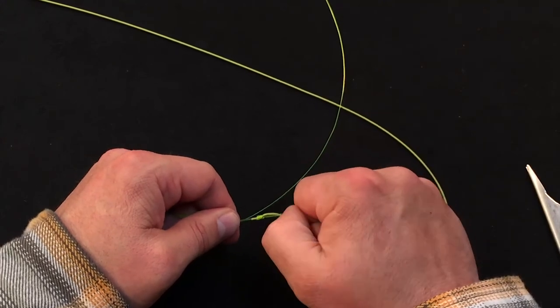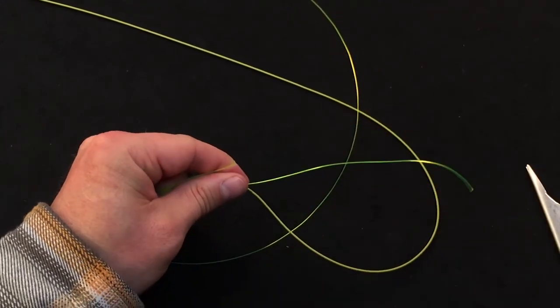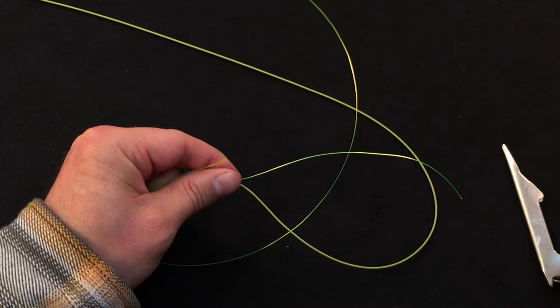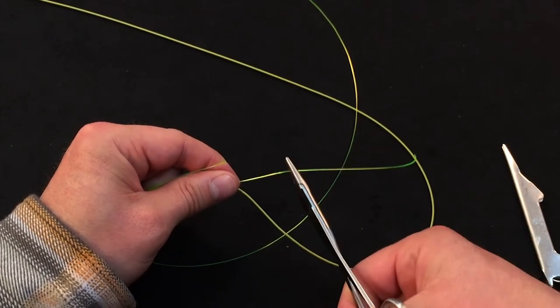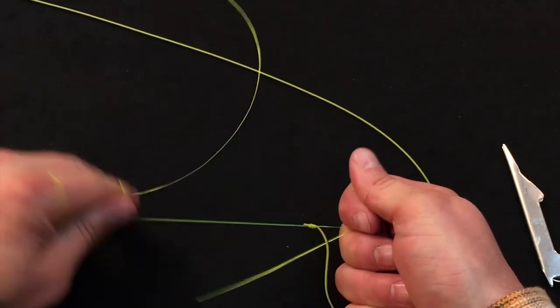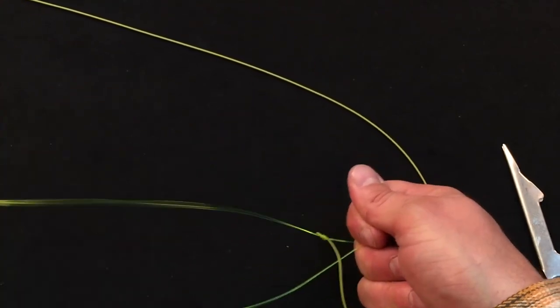As soon as we get to that point, we can seat it a little bit. Then we'll want to bring in a plier or something that'll give us some extra grip to pull the knot completely tight.